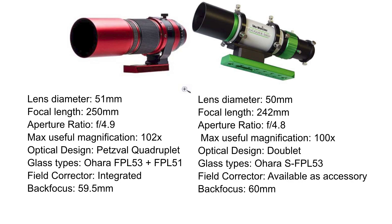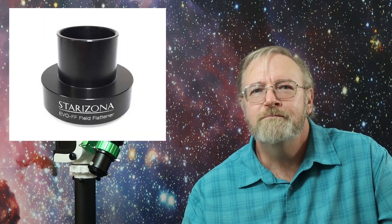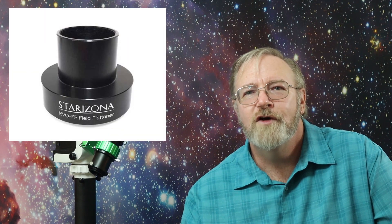To get the EvoGuider a little closer to the REDCAT, we will need a field flattener. Skywatcher makes their own, and Starizona also has one. I chose the Starizona Evo FF, which will allow us to use a filter wheel and or a mirrorless camera with the EvoGuider. The Skywatcher version has a short back focus, and it won't work with any of the accessories that I really want to use.